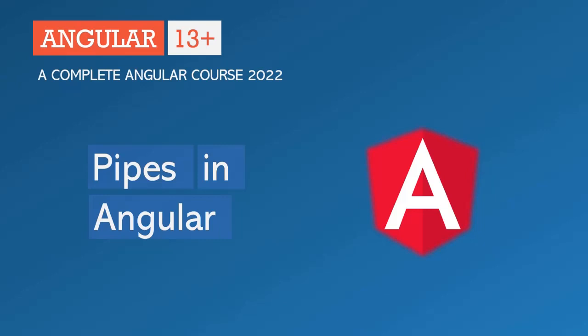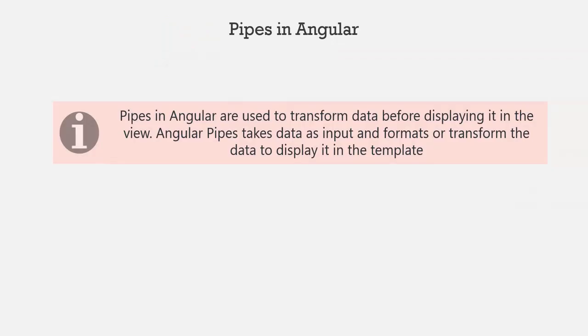Hello and welcome to another section of this complete Angular course. In this section, we are going to learn about pipes in Angular. Pipes in Angular are used to transform data before displaying it in the view. Angular pipes take data as an input and format or transform the data before displaying it in the template.